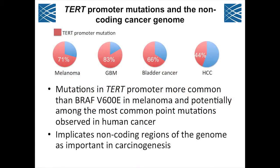In melanoma, GBM, bladder cancer, and hepatocellular cancer, TERT promoter mutations are the most common mutations found to date. They are more common than BRAF V600E and are among the most common point mutations observed in human cancer.